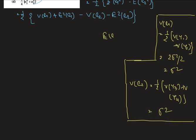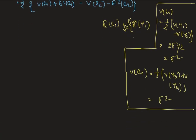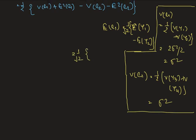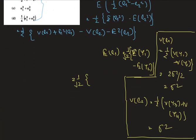Now, E(e1) = (1/√2)[E(y1) − E(y2)]. Since E(y1) = β1 + β2 + β3 and E(y2) = β1 + β2 + β3, they are equal, so E(e1) = 0.